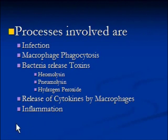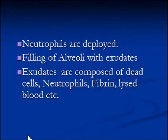Inflammation means the tiny blood vessels in and around the infected area become dilated and more permeable, now allowing plasma proteins to move into the affected area. Dilated blood vessels also allow extra blood flow, creating redness, heat, and swelling. In the meantime, neutrophils are deployed, which start phagocytosis again.